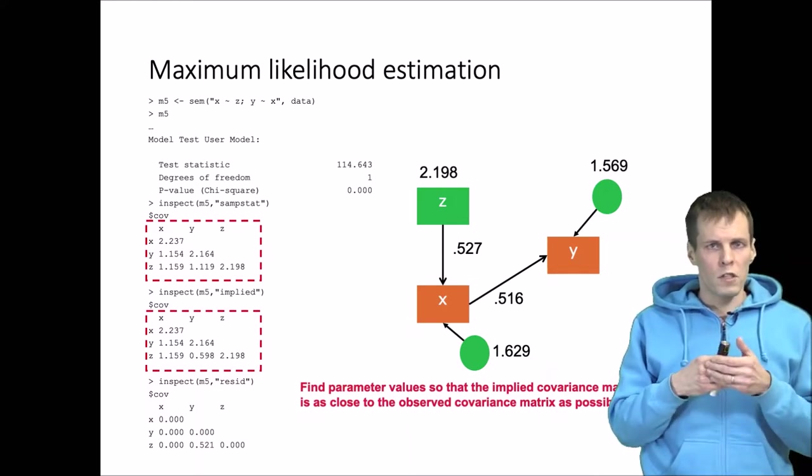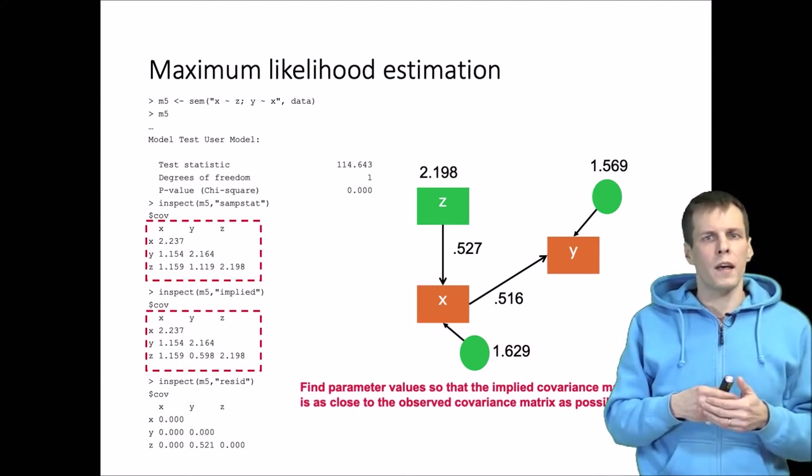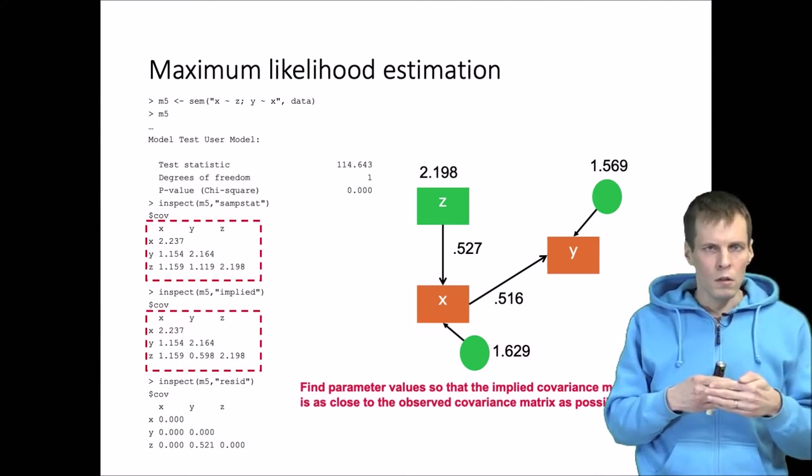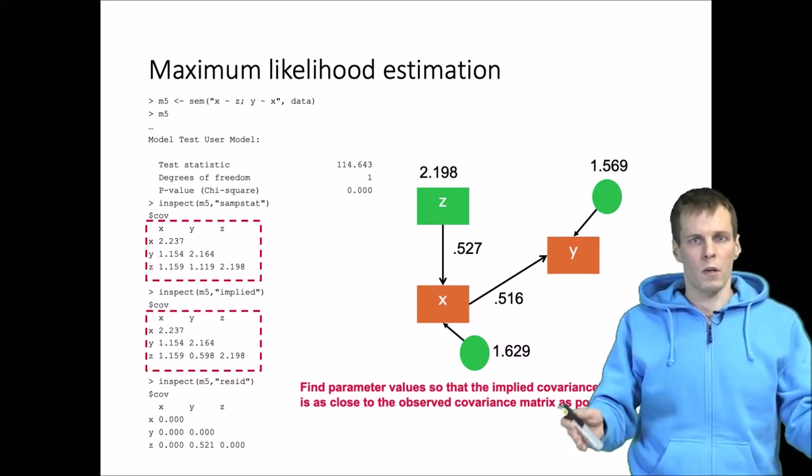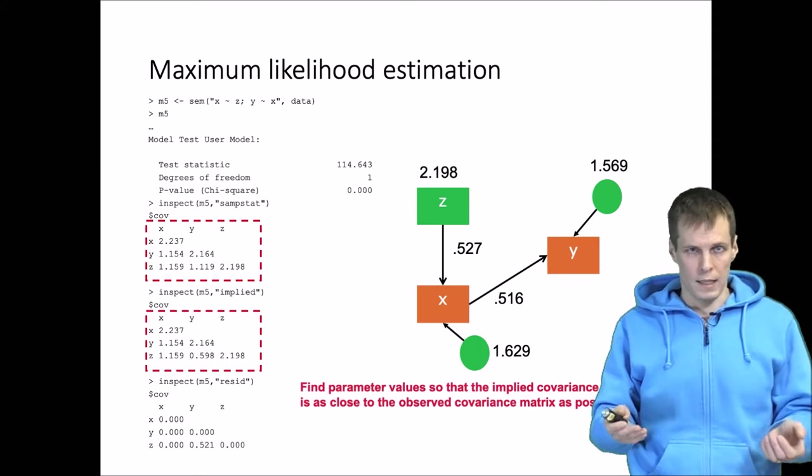For just identified models we can get them to be exactly equal because just identification basically means that all information we have is required for estimation, so there is no excess.